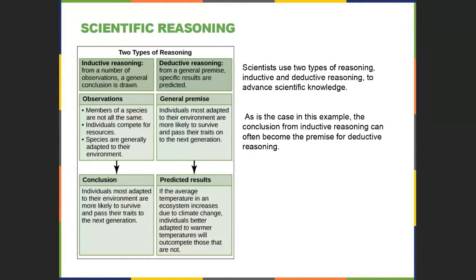If we look at different types of reasoning — there is inductive and deductive reasoning. Inductive reasoning really is looking at observations and then coming down with a conclusion. Deductive reasoning is where you have a general premise because you see specific results that predicted or show how that might be. We use them all the time; we just look at the data, make observations, make a conclusion, or we have a general premise and look for a predicted result.